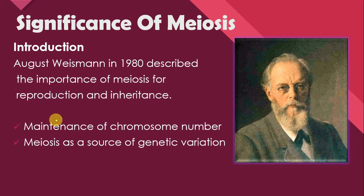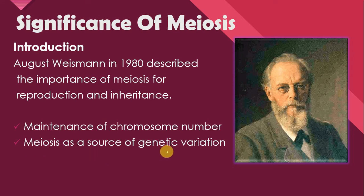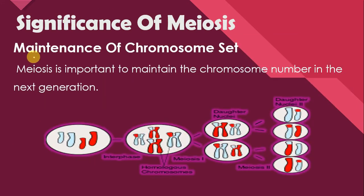What kind of important role does meiosis play? He said that meiosis is important for the maintenance of chromosome number in the next generation, and number two, meiosis is also important as a source of genetic variation. Let us discuss these two points one by one. Number one is the maintenance of chromosome set.